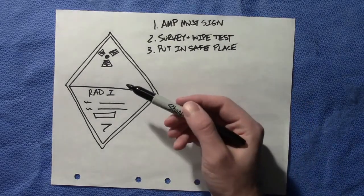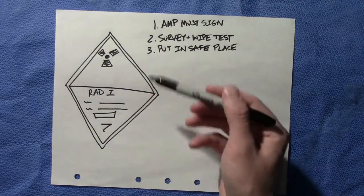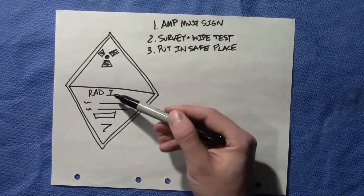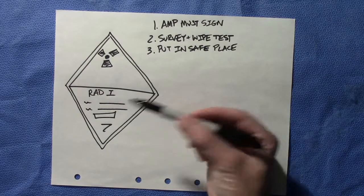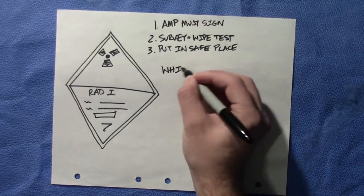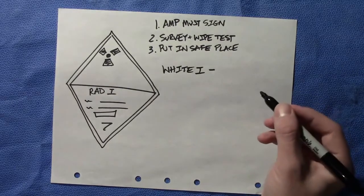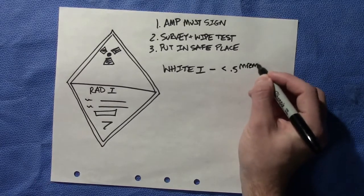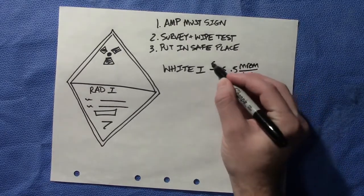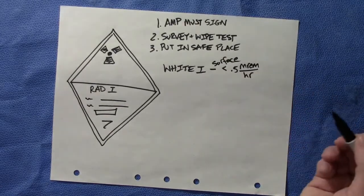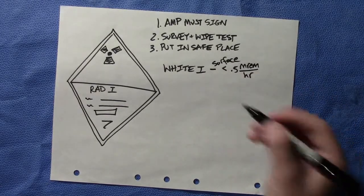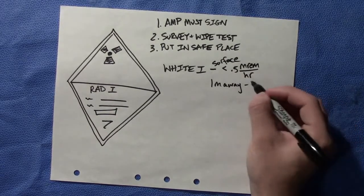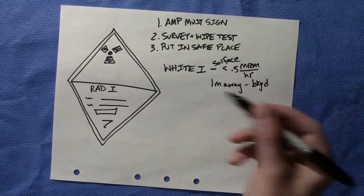The first is White I. They are all diamonds. The top of this diamond would be white and that corresponds to radioactive one. White I means that the surface is no more than 0.5 millirem per hour - that is a surface reading when you do your wipe test and surveys. At one meter away, for all three of these categories, you're going to be doing those tests, and that should be background.